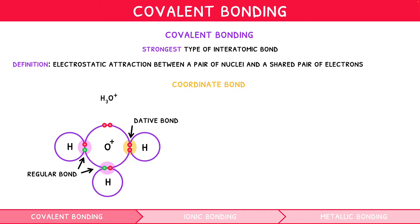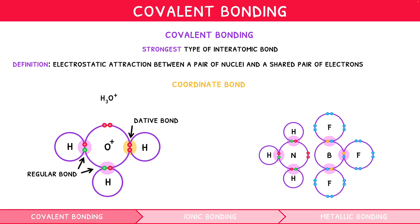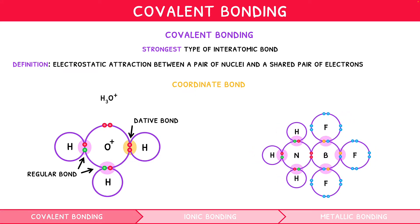This can also occur between molecules. For example, the nitrogen atom within NH3 donates a lone pair to BF3, forming a dative bond. When two compounds join in this way, the resulting structure is known as an adduct.